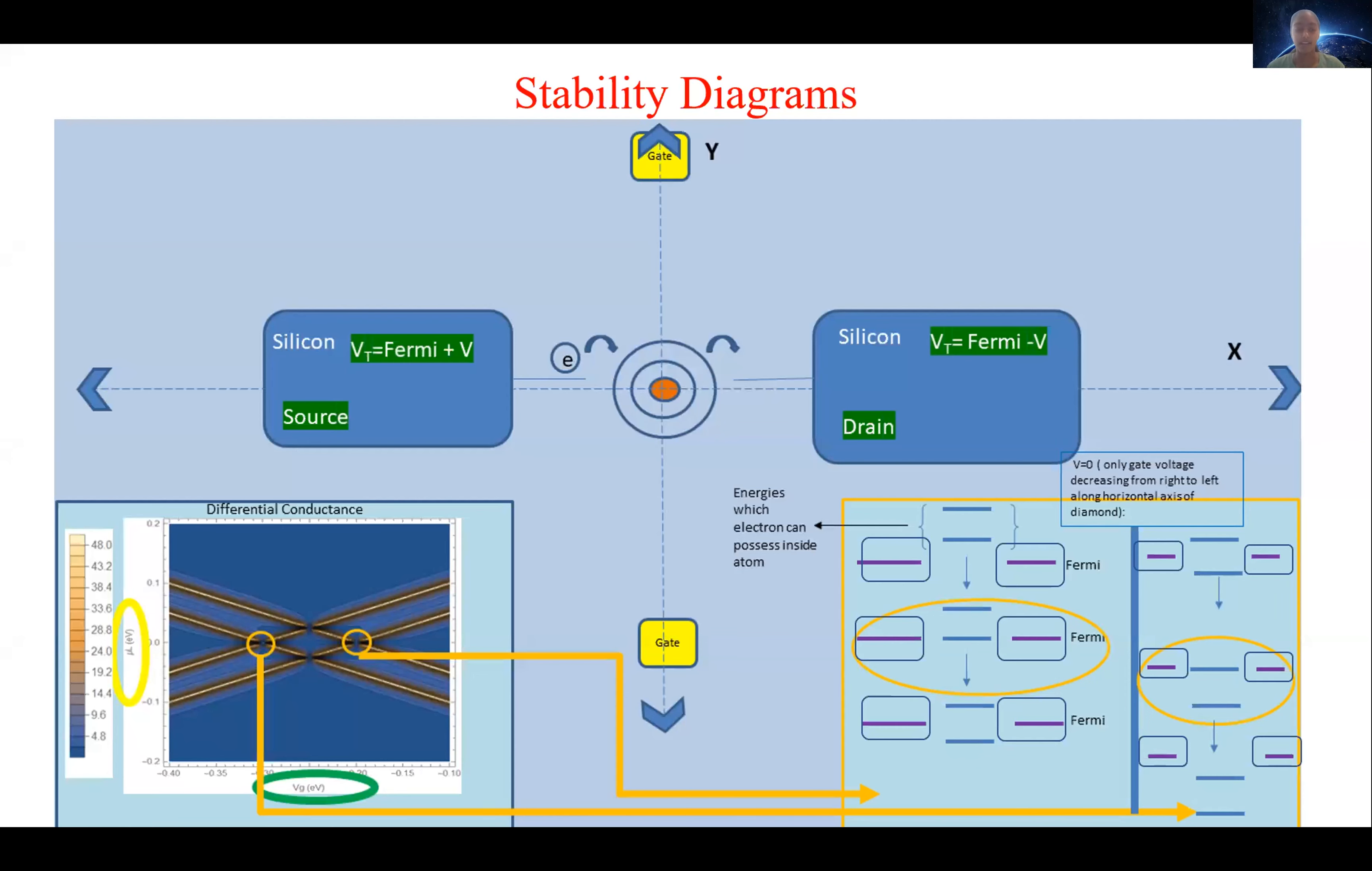The diamond structure arises from the fact that there are two discrete energy levels in the phosphorus atoms that can be occupied by electrons. And this picture on the bottom right shows how when we only increase the, change the gate voltage, keeping the source drain voltage constant, the peaks in differential conductance result from atomic energy level transitions.